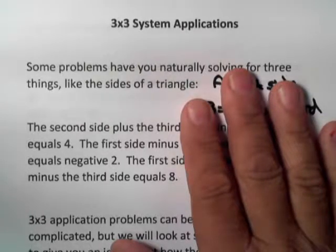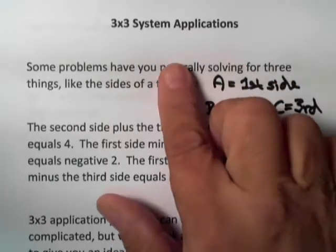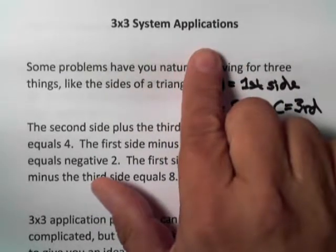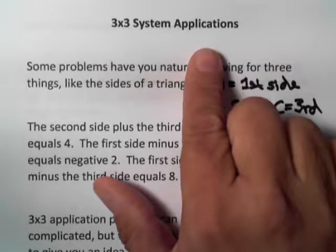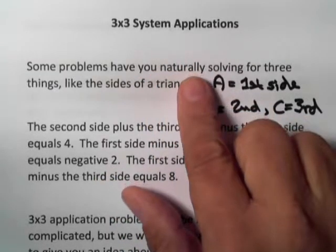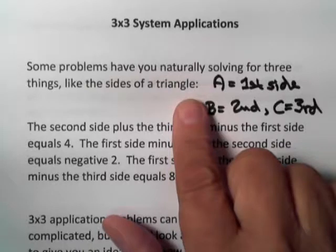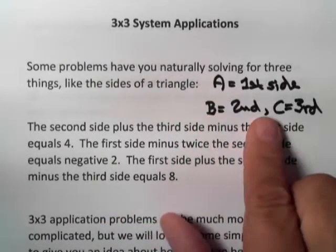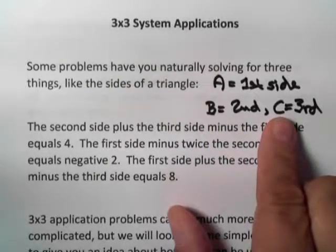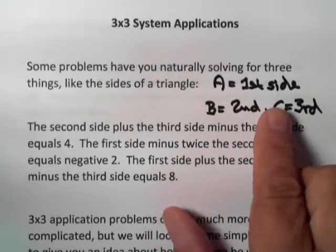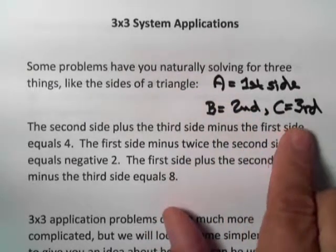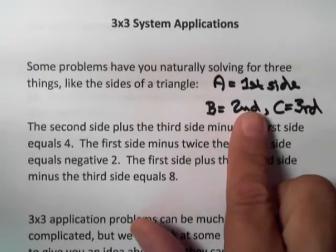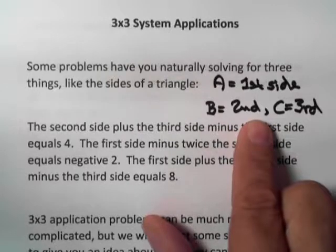Hi, I'm Adolph Oliver, and this is a video clip on 3x3 systems being used for word problems, for applications. There are some problems you're naturally solving that have three things, like the sides of a triangle. What you first do is decide what letters you're going to use to indicate those sides. I might make A be the first side, B be the second, C be the third. You could use other letters too — X, Y, and Z — anything you want, but clearly label what it is so you remember, and anybody looking at your work can see what you did.